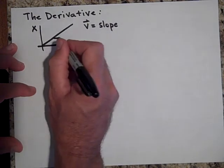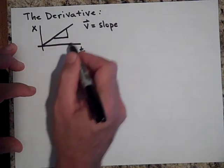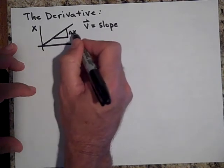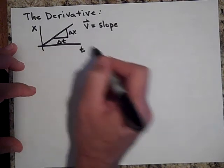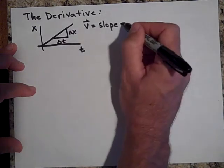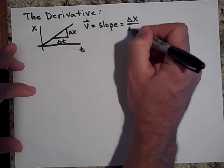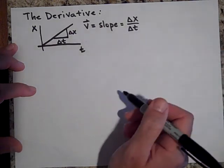And the slope of this graph is, if this is delta x and this is delta t, then slope is rise over run, and so that would be delta x over delta t. I'm hoping that looks familiar to you.